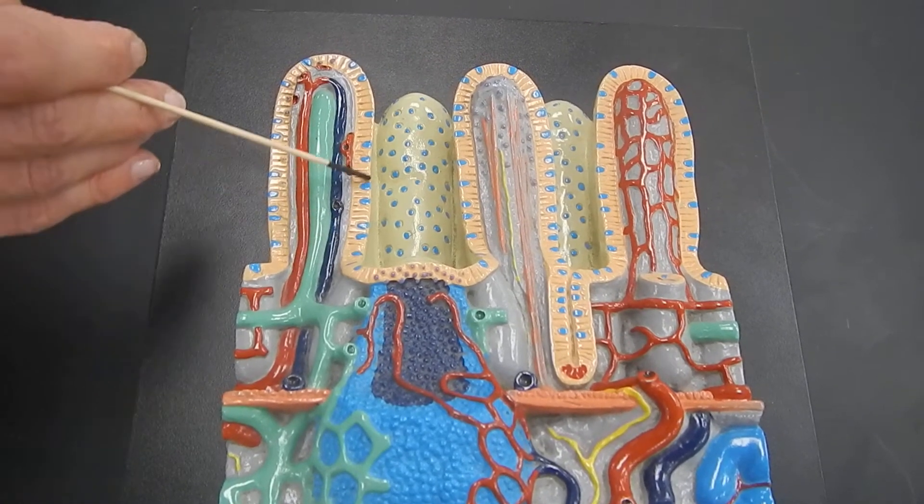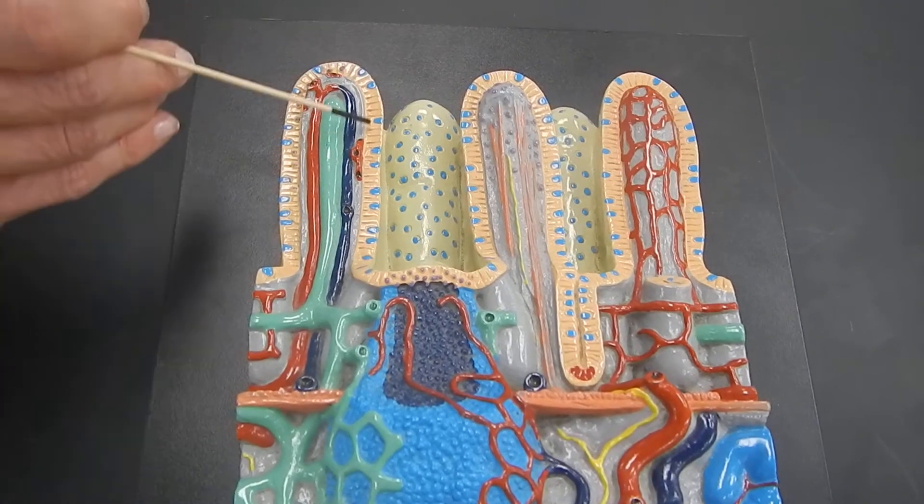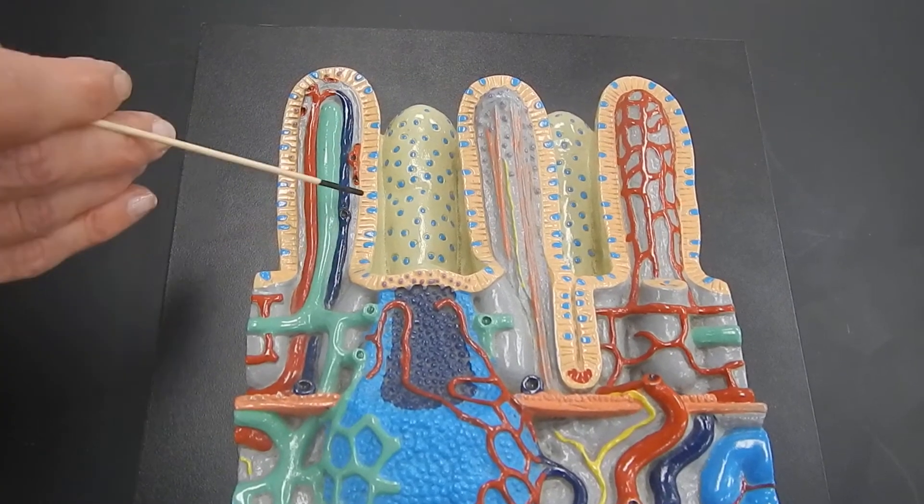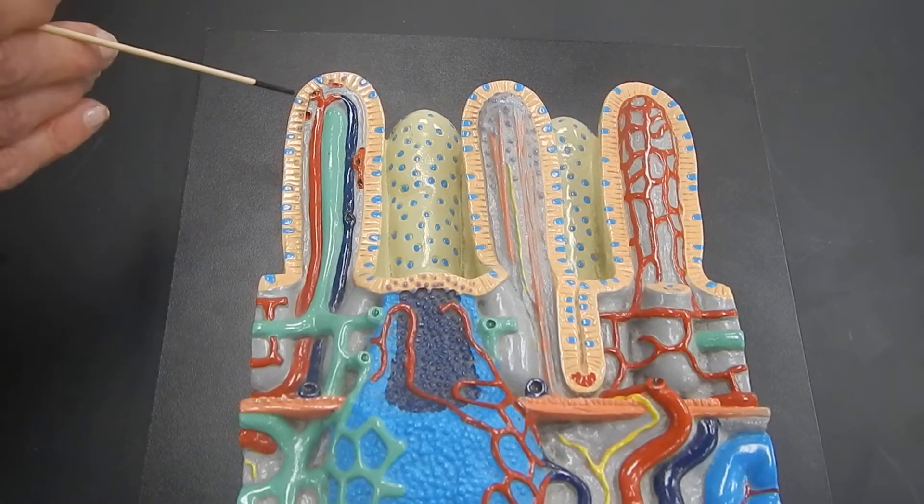The lining of the small intestine is made out of simple columnar epithelial cells. These blue ones make mucus, and they are called goblet cells.